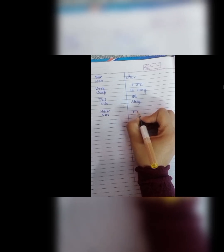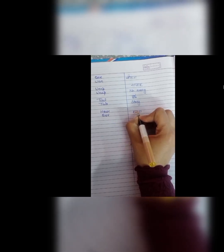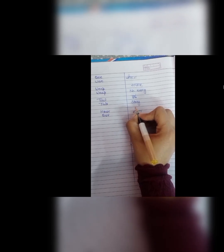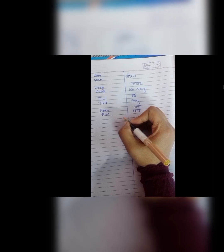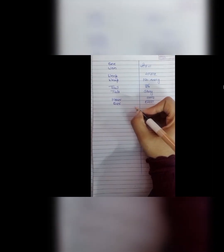Next is hour and our. H, O, U, R, hour means samay. Jho ghante hoota hai. Woh wala samay. And O, U, R, our means haemara.